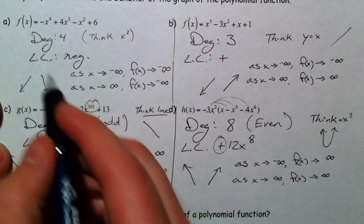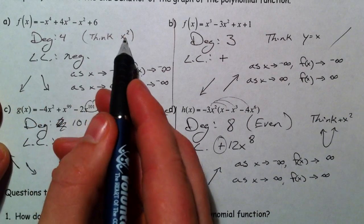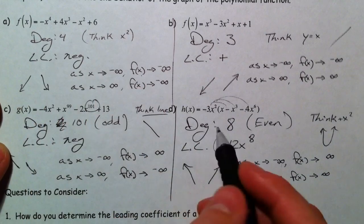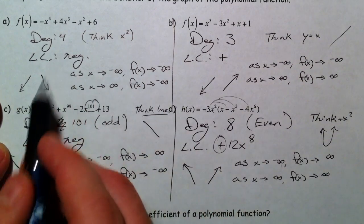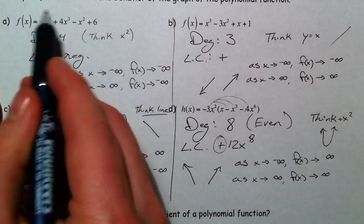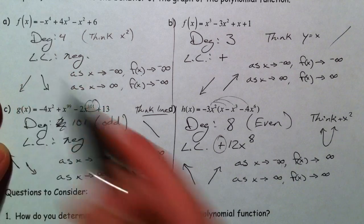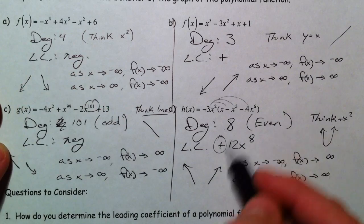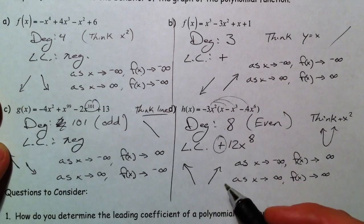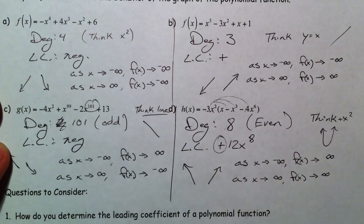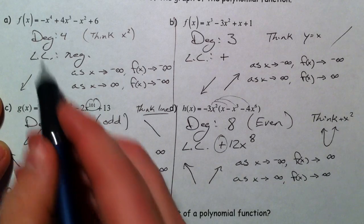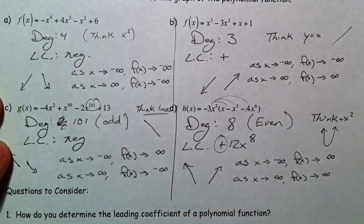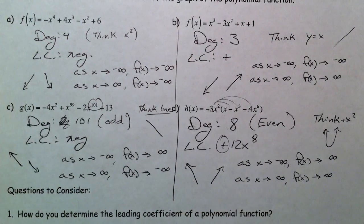Degree 4, think x squared. Degree 8, think x squared. This one had a negative leading coefficient; this one had a positive leading coefficient. And so what this is going to help us do is know where to start — above or below — and know where to finish — above or below.